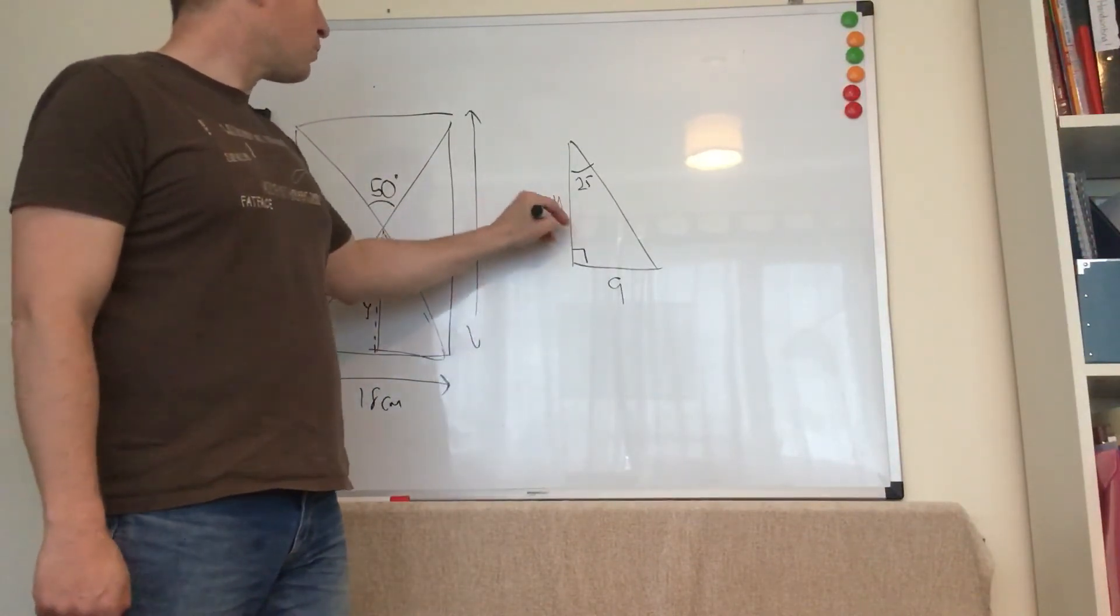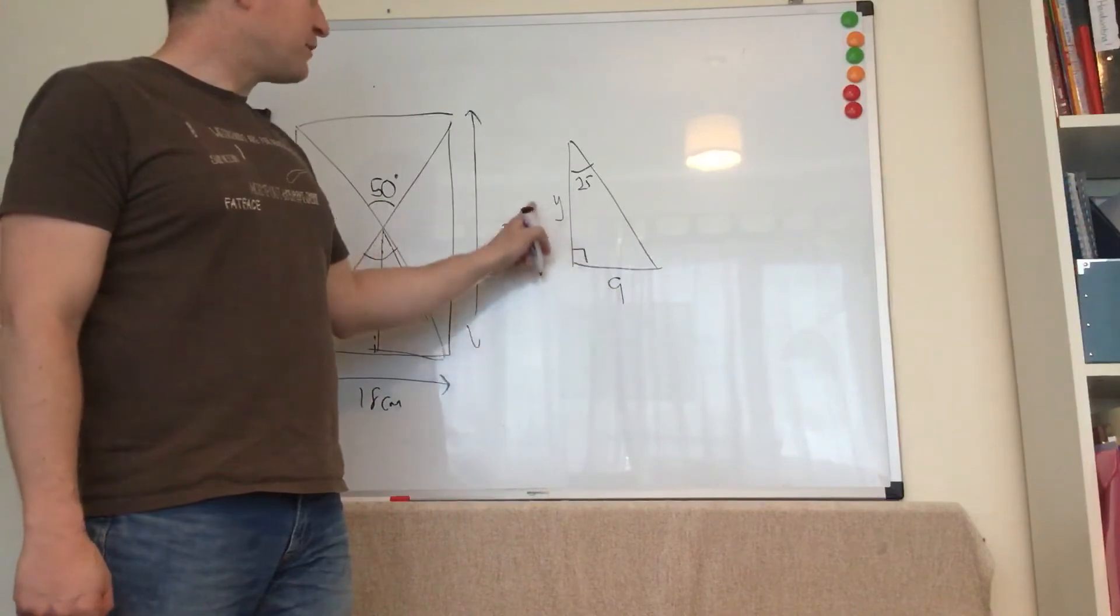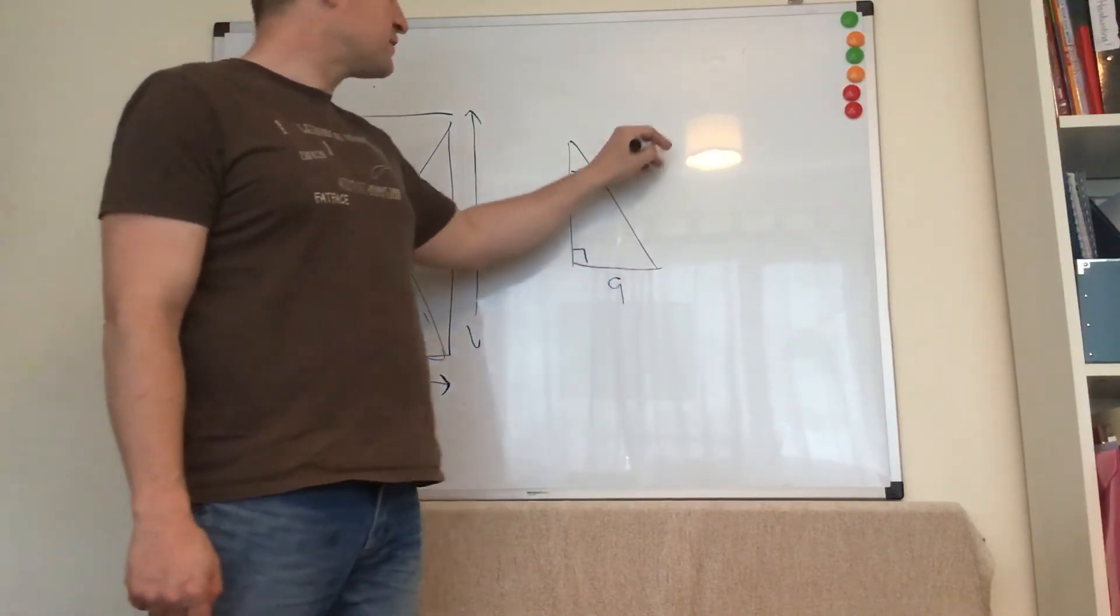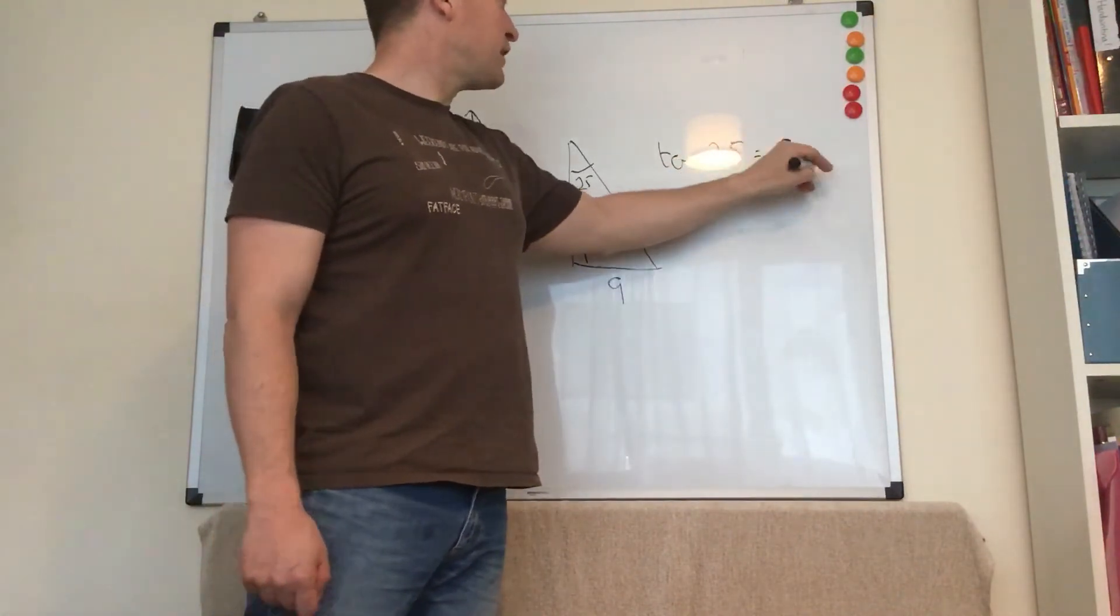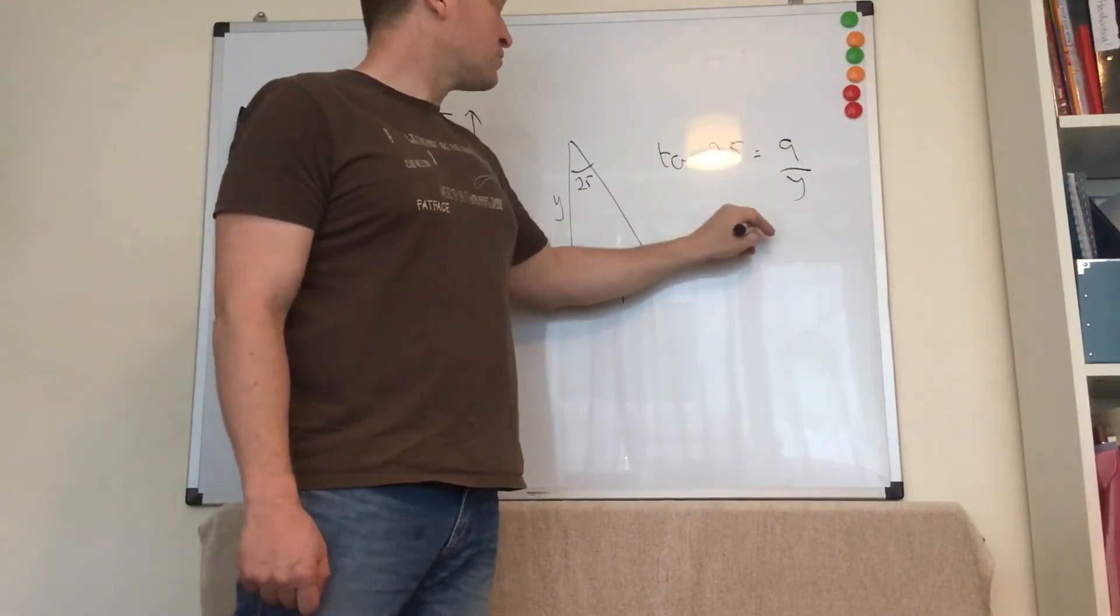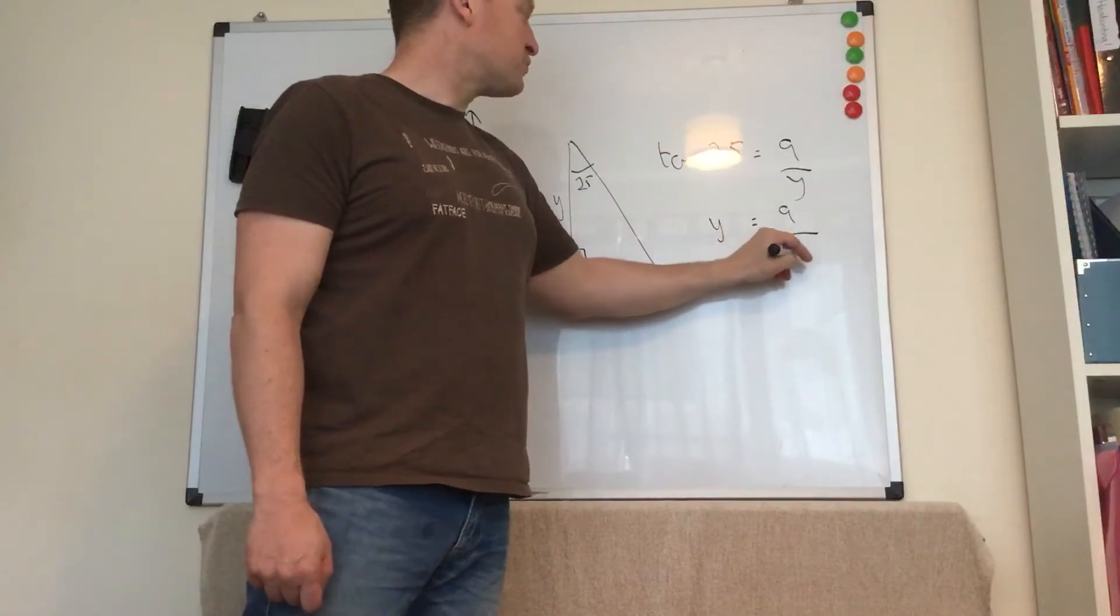Okay, I need the height, y. So I'm dealing with tan because I've got opposite and adjacent. So it's tan of 25 equals 9 over y. So y equals 9 over tan 25.